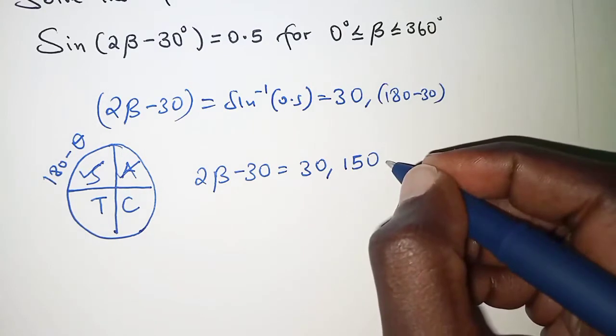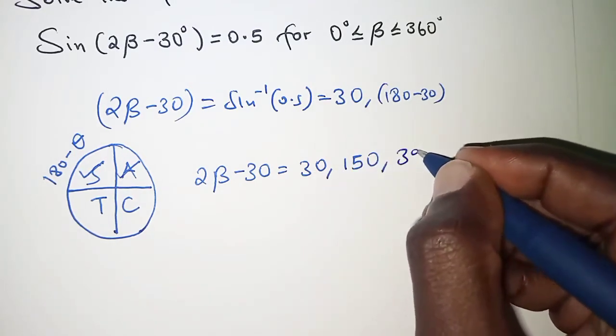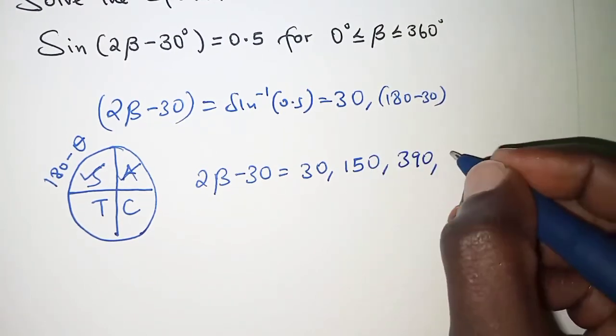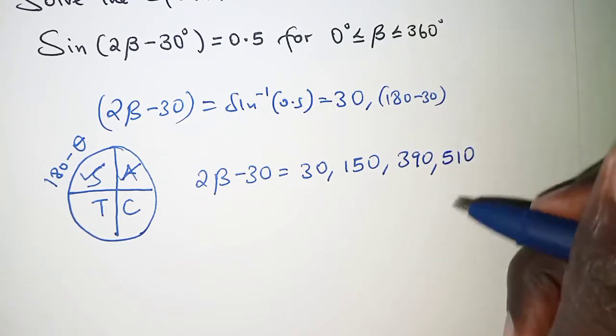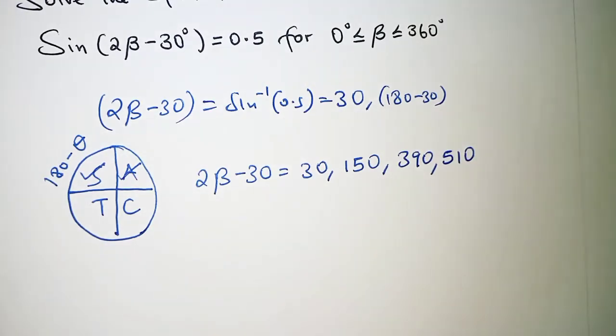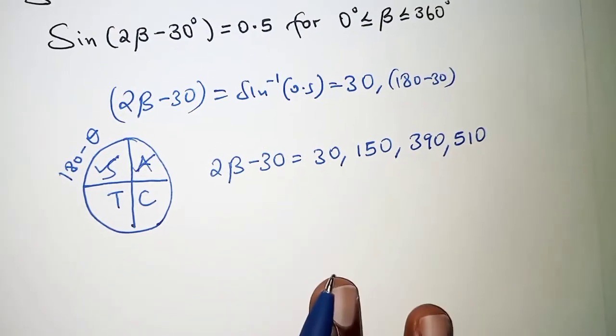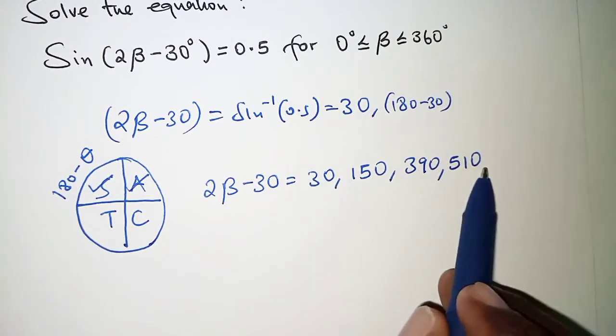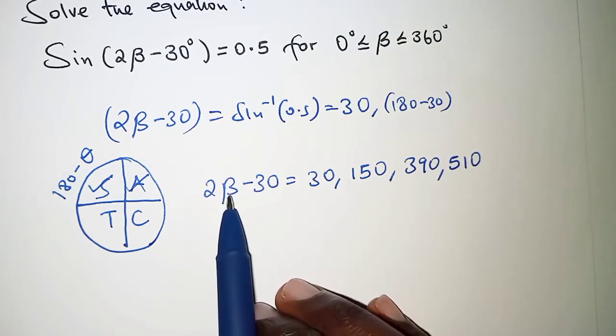So the next revolution we have 30 plus 360 that is 390, and then 150 plus 360 we have 510. The list can continue endlessly but suppose we stop it at this particular point. Let's see what that will give us. So we are going to equate each and every angle on the right hand side to twice beta minus 30, and then get the value of beta in turns.